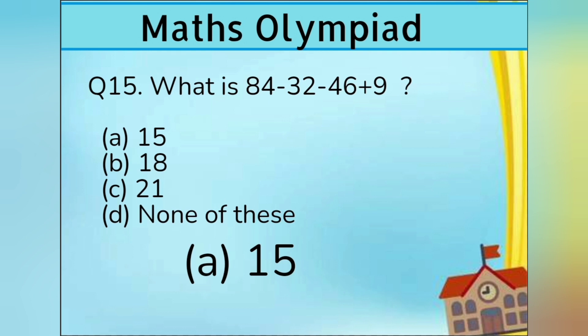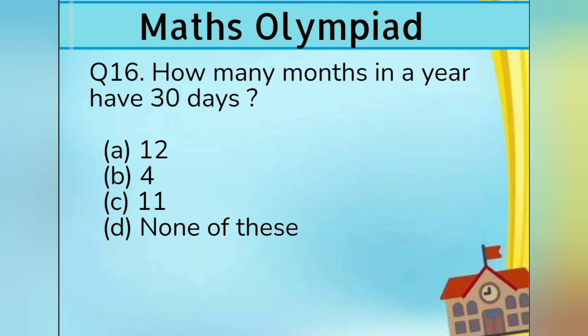Question number 16. How many months in a year have 30 days? Option A 12, Option B 4, Option C 11, and Option D none of these. Answer is Option B 4.